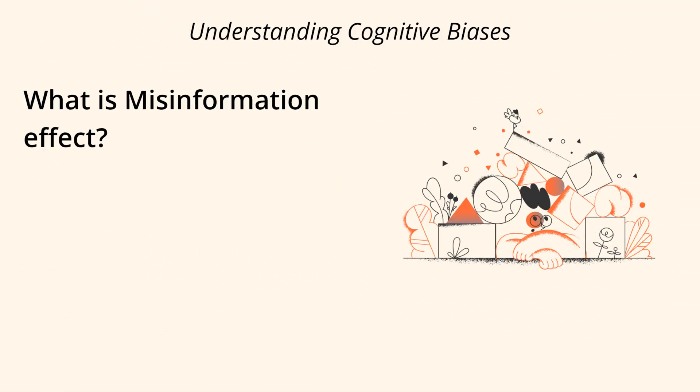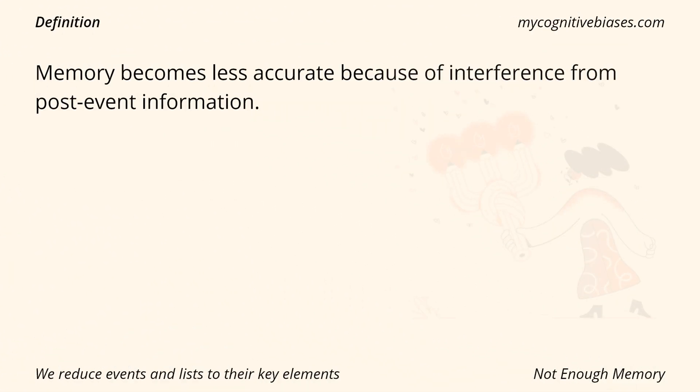What is the misinformation effect? Definition: Memory becomes less accurate because of interference from post-event information.